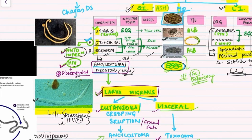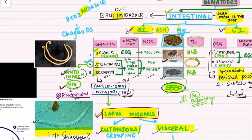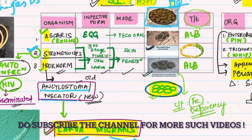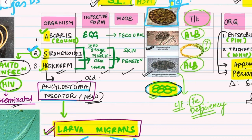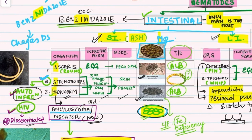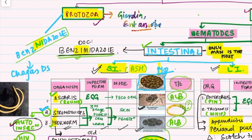For treatment, all intestinal nematodes have benzimidazole as the drug of choice — benzimidazoles include albendazole and mebendazole. Specifically, the drug of choice for Ascaris and hookworm is albendazole. For Strongyloides it is different — we will cover that shortly. Note: do not confuse benzimidazole (for intestinal nematodes) with benznidazole, which is the drug of choice for Chagas disease caused by a protozoan.